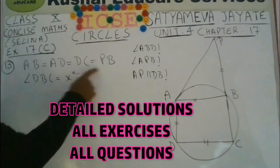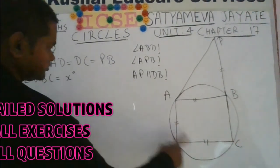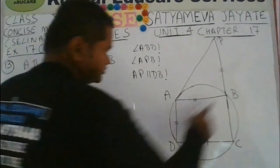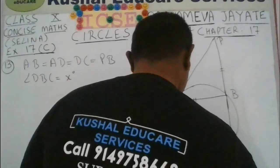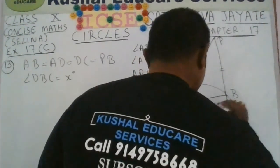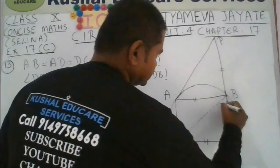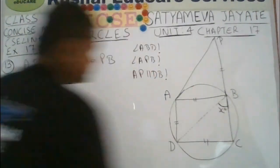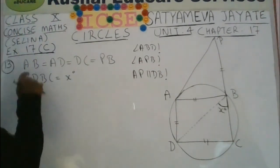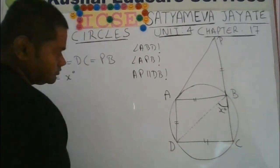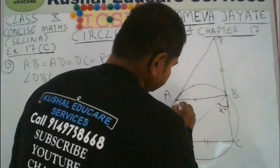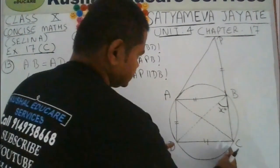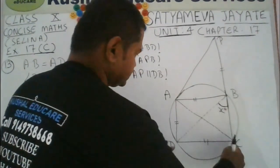As you read this question, AB equals AD equals DC equals PB, so you must use the properties of an isosceles triangle. Angle DBC is given as x degrees. Let us join points D and B so that we can see angle DBC clearly. Since the angles subtended in the same segment are equal, if arc CD subtends angle x at B, then it will also subtend the same angle x at vertex A. Joining A and C, angle DAC will also be x degrees.